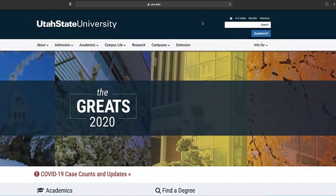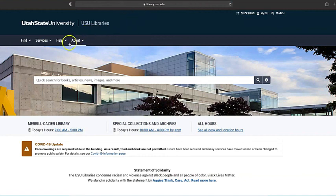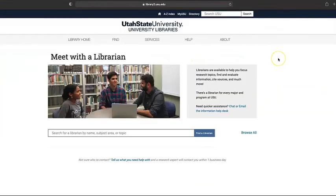If you need help finding sources or with research help in general, you can always ask a librarian. Go to library.usu.edu and click on Meet with a Librarian for more information.